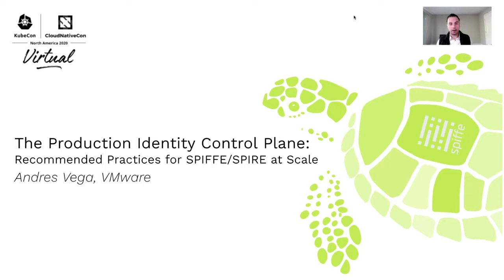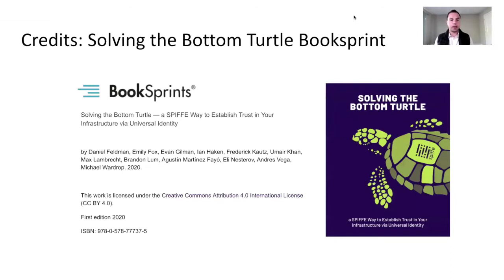I'll be talking today about a term we've recently started referring to SPIFFE/SPIRE as, which is the production identity control plane, and along with that, recommended practices for SPIFFE/SPIRE at scale. To start out, I'd like to thank the group of people from the community that recently got together as part of the SPIFFE/SPIRE Book Sprint. These are leading practitioners and subject matter experts that over the course of two weeks wrote a 200-page book on deploying and operating SPIFFE/SPIRE at scale.